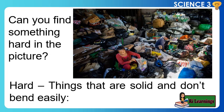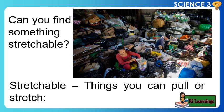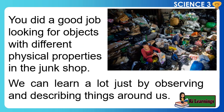Can you find something hard in the picture? Hard things are solid and don't bend easily. Can you spot something shiny? Shiny things shine or reflect light. Can you find something stretchable? Stretchable things you can pull or stretch. You did a good job looking for objects with different physical properties in the junk shop. We can learn a lot just by observing and describing things around us.